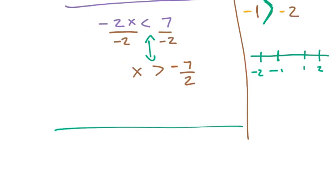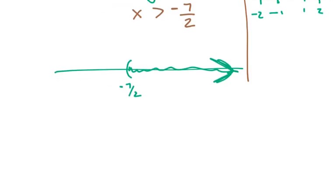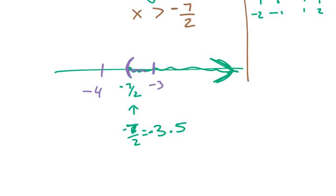If I graph it, we show it to the right again. On your homework, be very precise about where you put negative 7 over 2. To find it: negative 6 over 2 is negative 3, so negative 7 over 2 is negative 3.5. That's between negative 3 and negative 4, so when you graph it make sure you're pretty much in the middle. Take note of that when working through the homework.